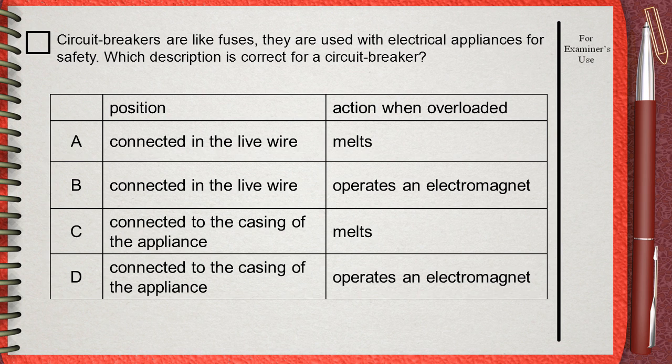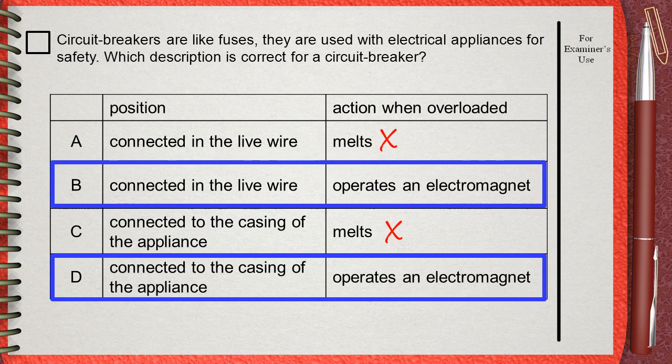One of the most important techniques in multiple-choice questions is removing the impossible choices. Choices A and C are impossible answers because circuit breakers do not melt in the circuit — they operate as an electromagnet. This limits our thinking to two choices: B and D.